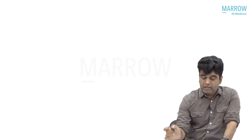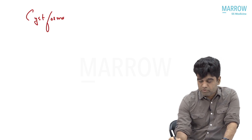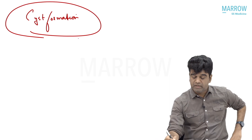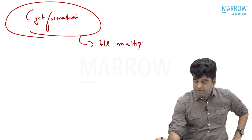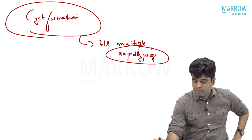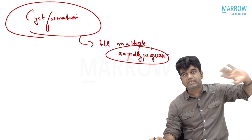Because of the mutation in polycystin 1 or polycystin 2, we are not able to maintain the differentiated phenotype of the tubular epithelium, and that leads to cyst formation. Key points on cyst formation: cysts are bilateral, multiple, and very rapidly progressive — they increase in number and size. Importantly, cysts involve only 5% of the tubules.